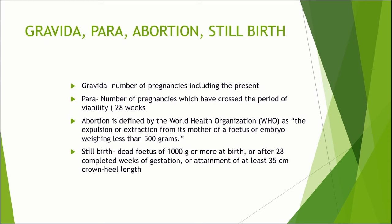First, in an antenatal case, you need to be clear about what is gravida, para, abortion, and stillbirth. Gravida is the number of pregnancies which includes the present pregnancy also. Para means the total number of pregnancies which has crossed the period of viability, that is 28 weeks. Any pregnancy which has completed 28 weeks will be included under para.